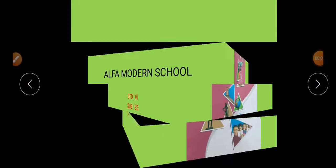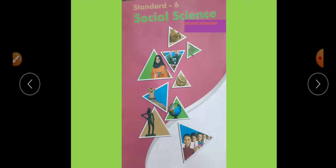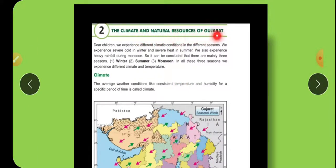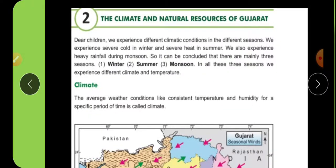Class six, assess day four. This is the book cover for Social Science, standard six, second semester. Chapter number two: The Climate and Natural Resources of Gujarat. In this lesson we will see the climate of Gujarat and the natural resources available in Gujarat. Dear children, we experience different climatic conditions in different seasons — severe cold in winter, severe heat in summer, and heavy rainfall during monsoon. So it can be concluded that there are three seasons: winter, summer, and monsoon.